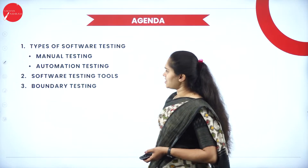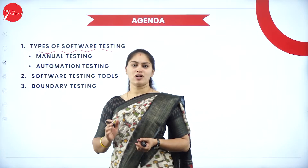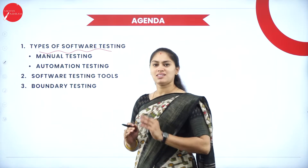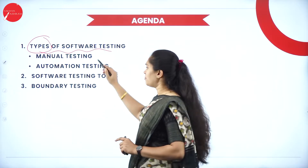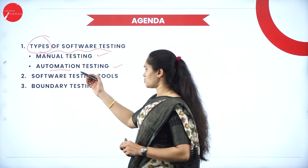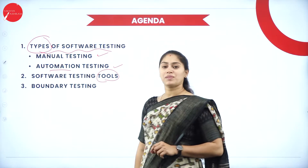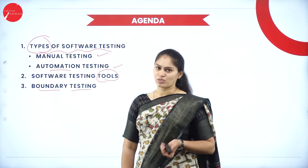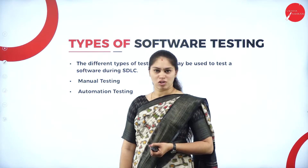In today's session we're going to see the types of software testing. You need to be very conscious when learning about types, methods, and their classification — there is a difference. Types of software testing can be manually done, which is manual testing, or using some automation tool, which is automation testing. We'll also see the tools used for software testing and what is meant by boundary testing.